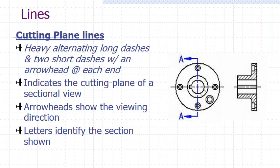The cutting plane line is the plane that cuts through a component to create a sectional view to show internal details that cannot be seen from the outside. It is like cutting an apple in half.